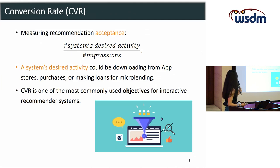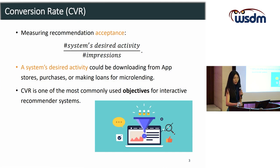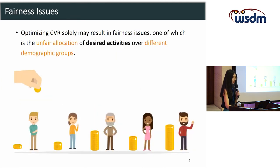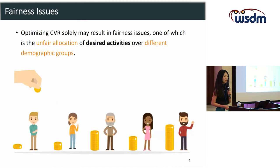For example, the system gets paid if the recommended app has been downloaded by the user. However, if we optimize the conversion rate solely, it may result in fairness issues.